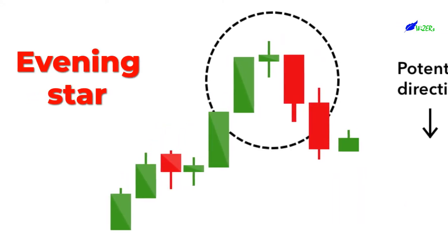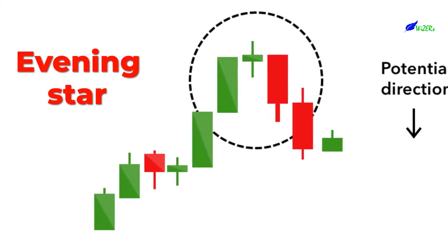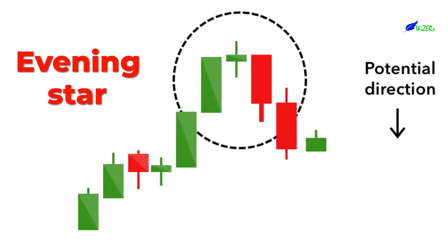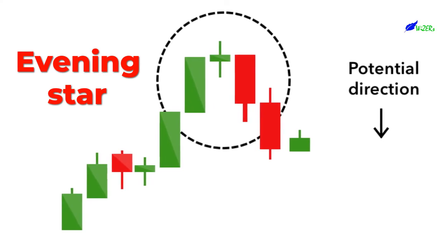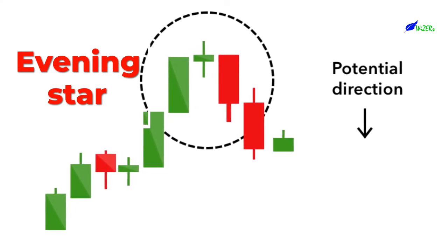Evening Star. The Evening Star is a three-candlestick pattern that is the equivalent of the bullish morning star. It is formed of a short candle sandwiched between a long green candle and a large red candlestick. It indicates the reversal of an uptrend, and is particularly strong when the third candlestick erases the gains of the first candle.